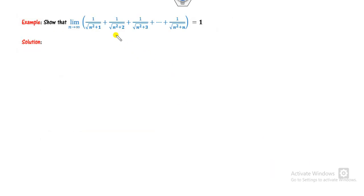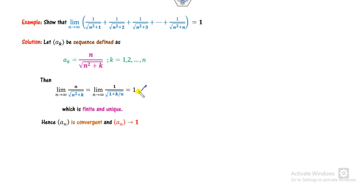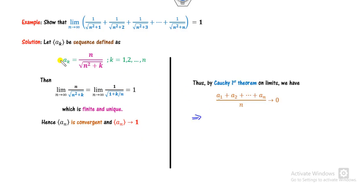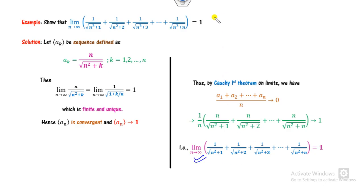For the last example, the expression is a series — terms 1, 2, 3 and so on. Since n is already present, let a_k be the kth term. Dividing and multiplying both sides by n converts it to an average. The limit as n approaches infinity is 1, which is unique and finite, so it converges to 1. By Cauchy's theorem, taking a_k = n/(n² + k), the terms go from n/(n²+1) to n/(n²+n); taking n as common factor cancels, giving the limit as 1.